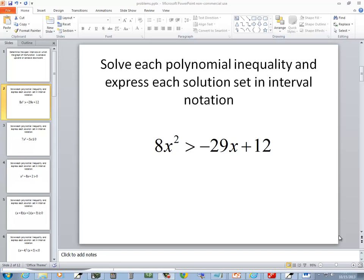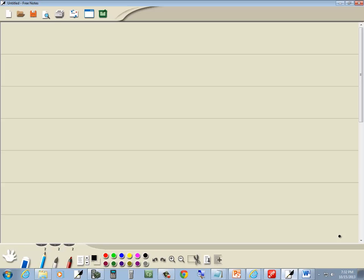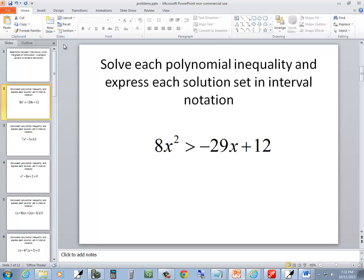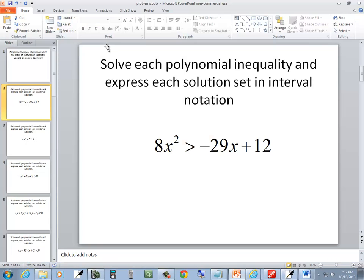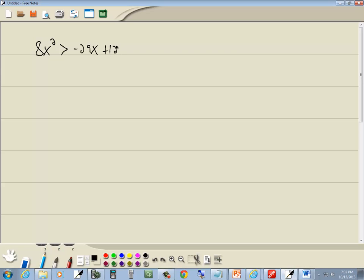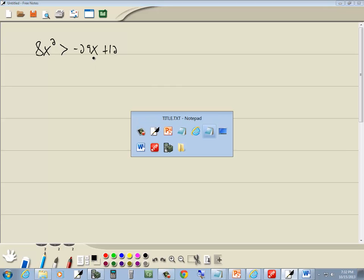In this problem we want to solve this polynomial inequality. We have 8x squared is greater than negative 29x plus 12.